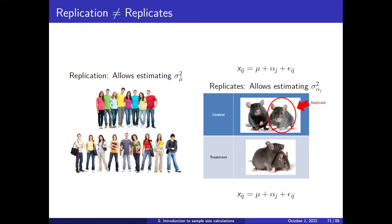Clarification on names: replication and replicates are different things. Replication is when you repeat the experiment with different individuals. When you have two groups, the animals in each of the groups are called replicates.